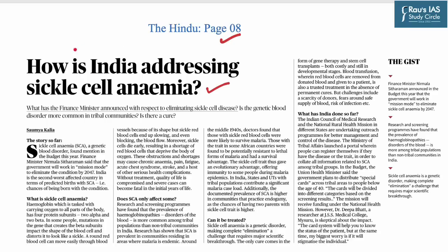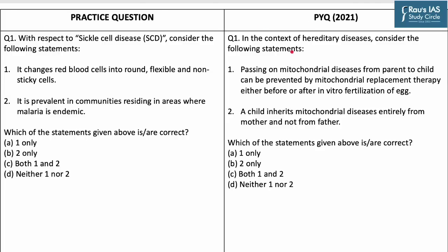The article is about how India is addressing sickle cell anemia. UPSC in previous years has asked questions regarding various diseases — for instance, in 2021 there was a question regarding hereditary diseases. So let us solve our practice question, which states: with respect to sickle cell disease, consider the following statements.